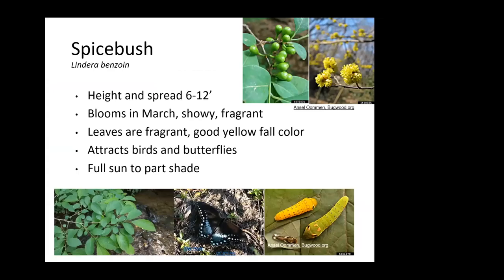Spicebush, Lindera benzoin, has a height and spread of six to twelve feet, blooms in March with a showy fragrant flower, and the leaves are also fragrant — that's why it's called spicebush. It has good yellow fall color that attracts birds and butterflies. And of course there is the spicebush swallowtail butterfly that requires this plant.